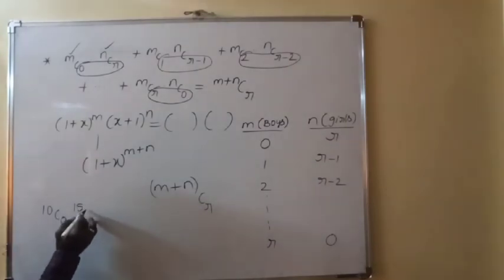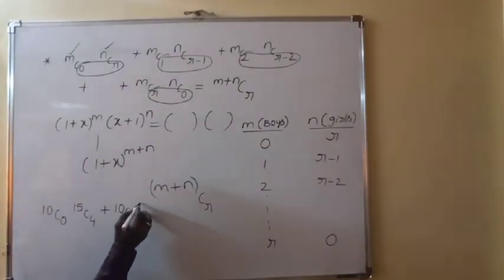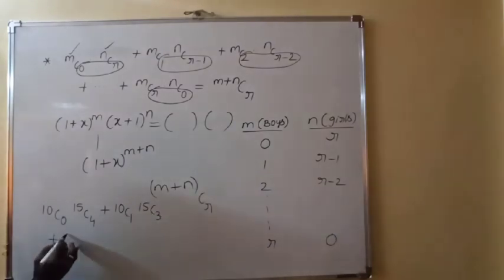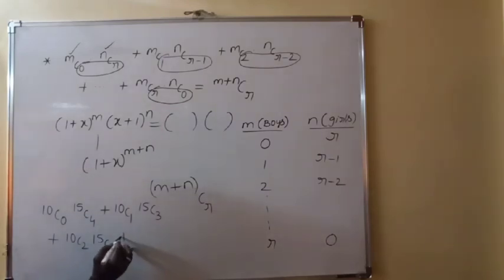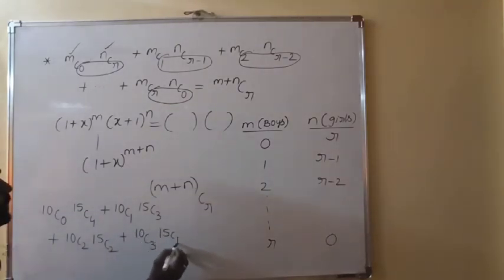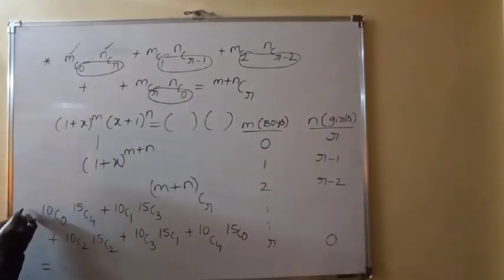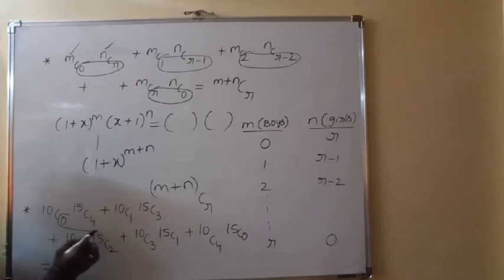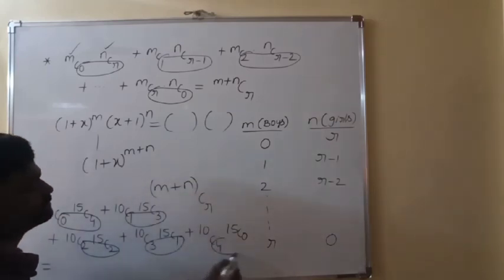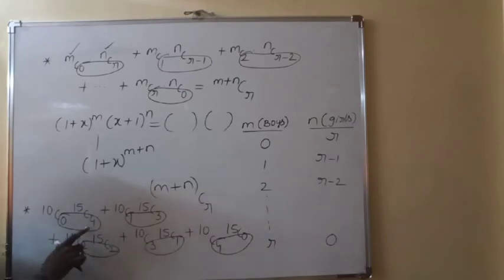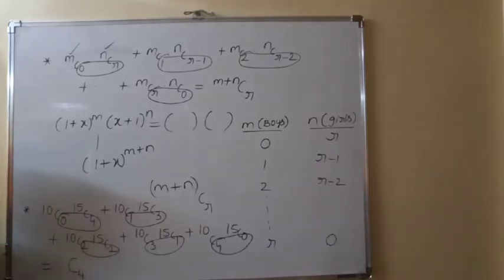Example: 10C0·15C4 + 10C1·15C3 + 10C2·15C2 + 10C3·15C1 + 10C4·15C0. Observe that in each term the sum of subscripts is 4 (constant). One series begins with 0 and ends with 4, the other begins with 4 and ends with 0. The tops add to 10+15 = 25, and the constant subscript sum is 4. Answer: 25C4.